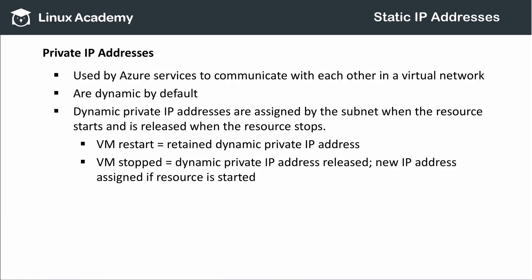Now let's talk about private IP addresses. By default, each Azure resource that is created inside a virtual network has a private IP address assigned to it from the pool of available addresses in the subnet. As it is with public IP addresses, these private IP addresses are retained until the underlying service is stopped, at which time the IP address is released. If I start the underlying service at some later time, that service will receive a new private IP address from the subnet.